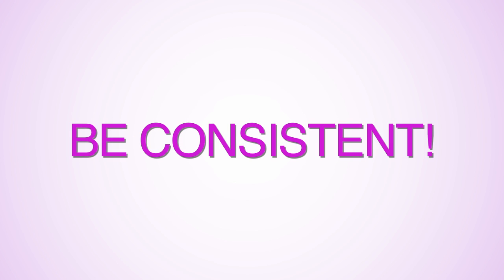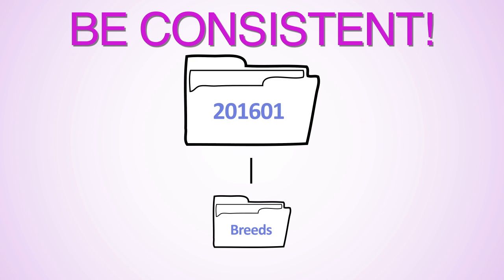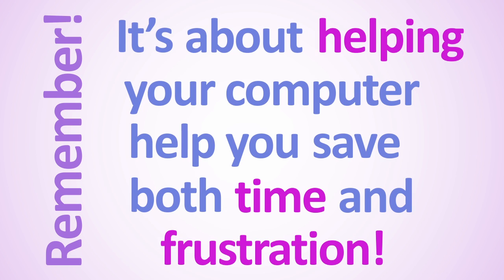Maybe you don't want to make any more folders at all. Whatever you decide to do, make sure you are consistent across the project. This means that if you have a nested folder for dog breed inside the January 2016 folder, you do so for the rest of the months as well. When you are ready to create a 2017 calendar, you can copy your 2016 folder structure into the new project and get to work quickly. Remember, it's about helping your computer help you save both time and frustration.